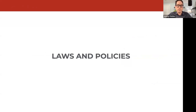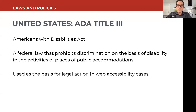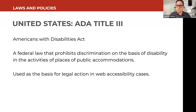What laws and policies require accessibility and how do they relate to WCAG? The most important in the United States is ADA Title III, part of the Americans with Disabilities Act passed in 1990. It's a federal law that prohibits discrimination on the basis of disability in places of public accommodations. Since websites have become understood as places of public accommodation, if you have a retail website, it needs to be accessible to people with disabilities — just as your physical store must be wheelchair accessible. It's the basis for legal action in web accessibility cases.